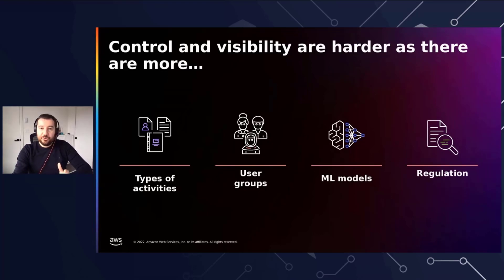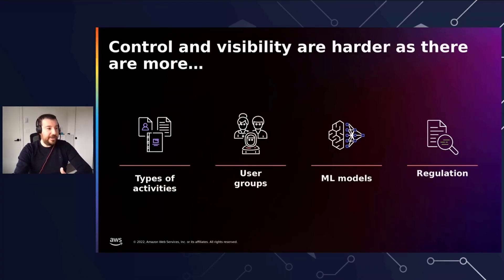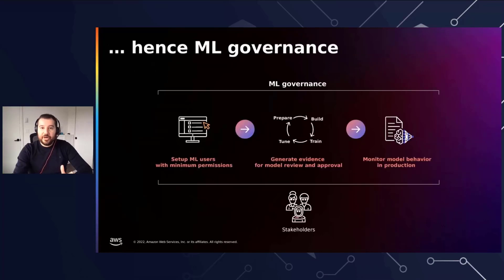It's not only the ML activities and user groups, but also the number of models that companies have to govern has increased a lot recently. For example, we know of one organization which has more than 5,000 data scientists and over 1,000 ML projects, generating tens of thousands of models they have to govern. Additionally, governments around the world have started proposing regulations that may require visibility into your models. Hence, ML governance requires the ability to control, validate, and oversee people, process, and technology needed to apply machine learning, and enables you to understand the impact on all relevant stakeholders, including customers and regulators.